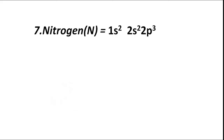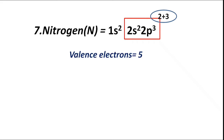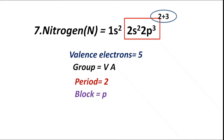Atomic number 7, nitrogen (N), has electronic configuration 1s2 2s2 2p3. The valence shell is L, with sub-shells 2s2 and 2p3 containing total electrons 2 plus 3, equal to 5. Hence valence electrons are 5, group 5A or VA, period 2. Highest coefficient is 2, period 2. Block P — valence electrons fill p sub-shell. Valency is 3, since valence electrons exceed 4: 8 minus 5 equals 3.